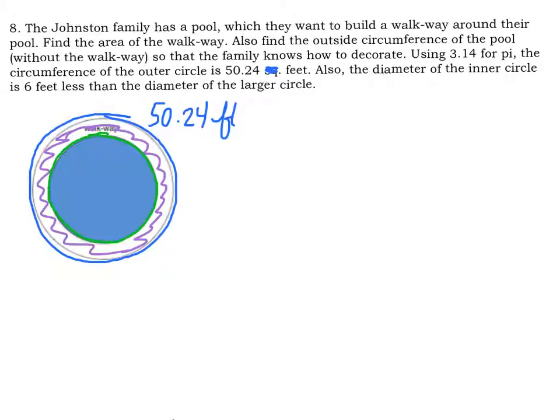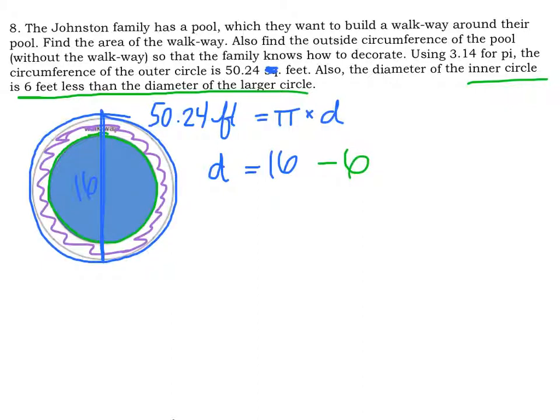Let's start by finding diameter. Because we need to get to radius for areas. So if we know this is circumference, we can say it's pi times the diameter of the big area. And if we solve, we get diameter of the big circle is 16. So from top of the blue to bottom of the blue, that is 16. It says that the inner circle is 6 feet less than the diameter of the larger circle. So if the inner circle is 6 feet less than this diameter, we get an inner circle with a diameter of 10. So the diameter of our actual pool is 10.